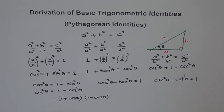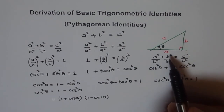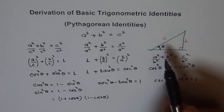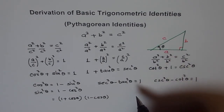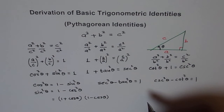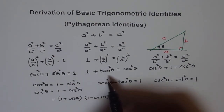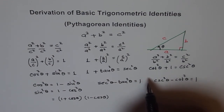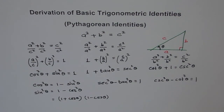Try to understand these basic trigonometric identities. They are also known as the Pythagorean identities because they are derived from the Pythagorean theorem: A squared plus B squared equals C squared. This is a very simple derivation but extremely important, and these three identities form the foundation. If you have a good understanding of these, you should be in a good position to work with identities. Thank you.